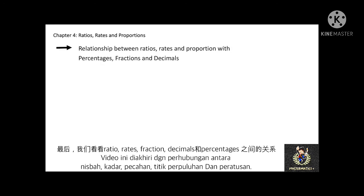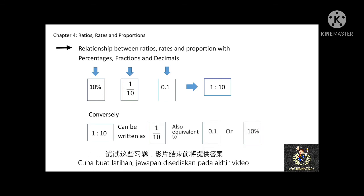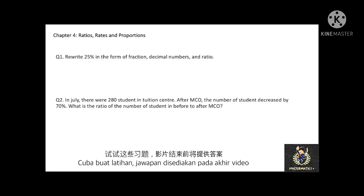The last part of this chapter covers the relationship between ratios, rates, and proportion with percentage, fraction, and decimal. For example, 10% can be written as 1 over 10, which equals 0.1, and the ratio is 1 to 10. Conversely, a ratio of 1 to 10 can be written as the fraction 1/10, which is equivalent to 0.1 or 10%. Now let's pause the video for 5 minutes and try this question. The answers are provided at the end of this video.